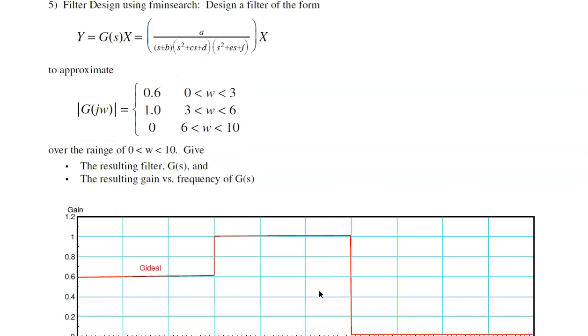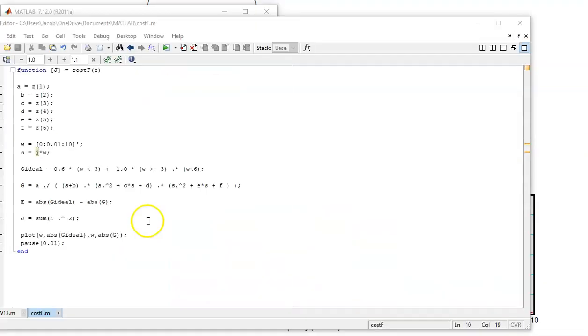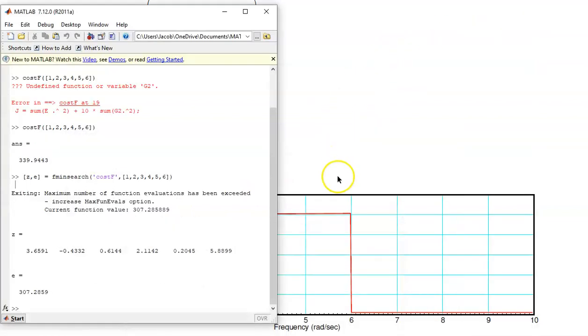Problem number 5: I'm trying to build a filter to meet this characteristic. And the trick here is to create a cost function, where the minimum is when I meet the desired frequency response. So I'm going to guess Z. Z I'll parse and get the parameters A through F. And this is what they mean. I'm saying the frequency is between 0 and 10 radians per second. What the gain should be is 0.6 for frequency is less than 3, and 1 for frequencies between 3 and 6. Compare the two. Take the difference. Return the sum squared error. That's my cost function.